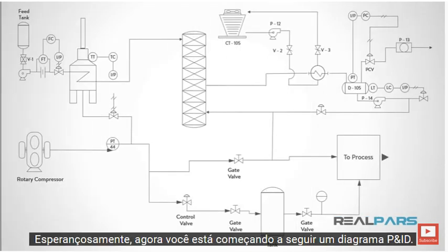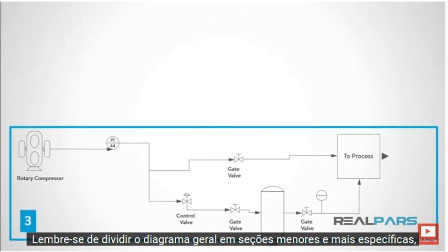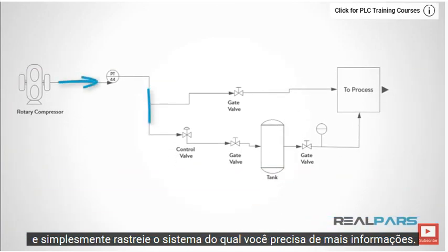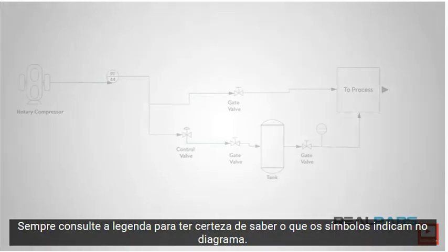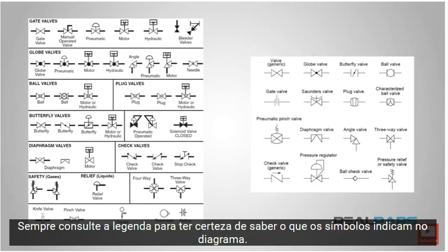Hopefully by now, you're getting a feel for following a P&ID diagram. Just remember to break the overall diagram down into smaller, more specific sections, and simply trace the system that you need more information from. Always refer to the legend to make sure you know what the symbols indicate on the diagram.